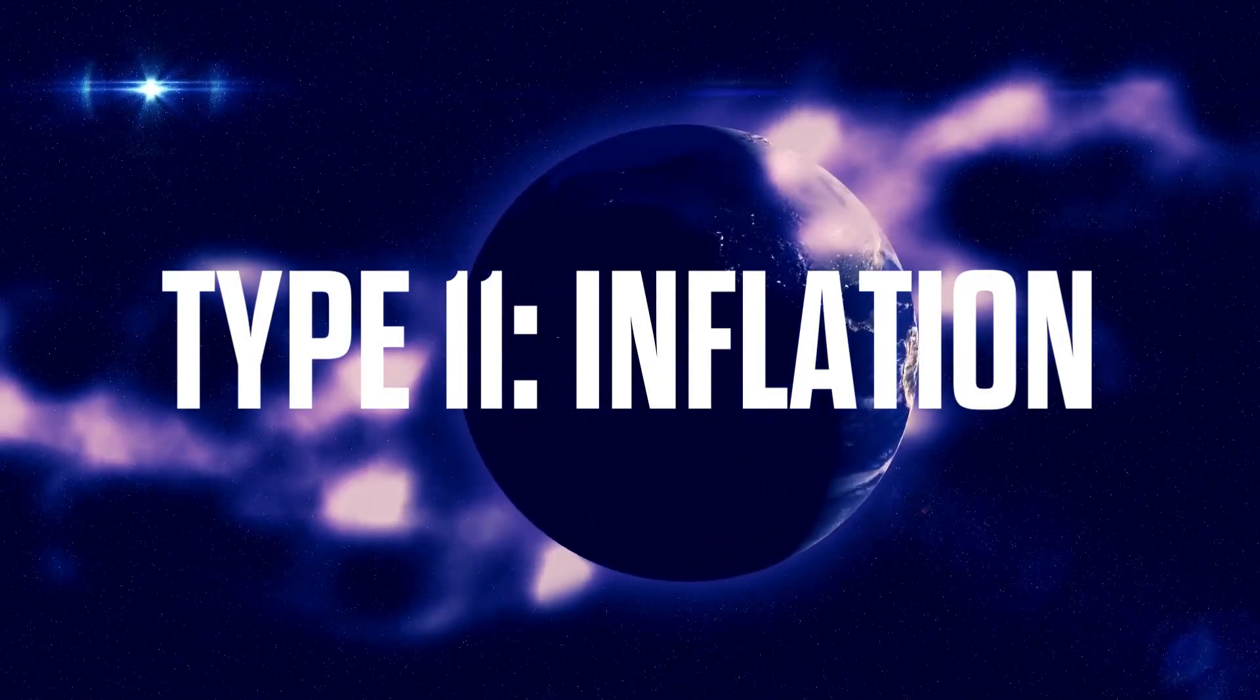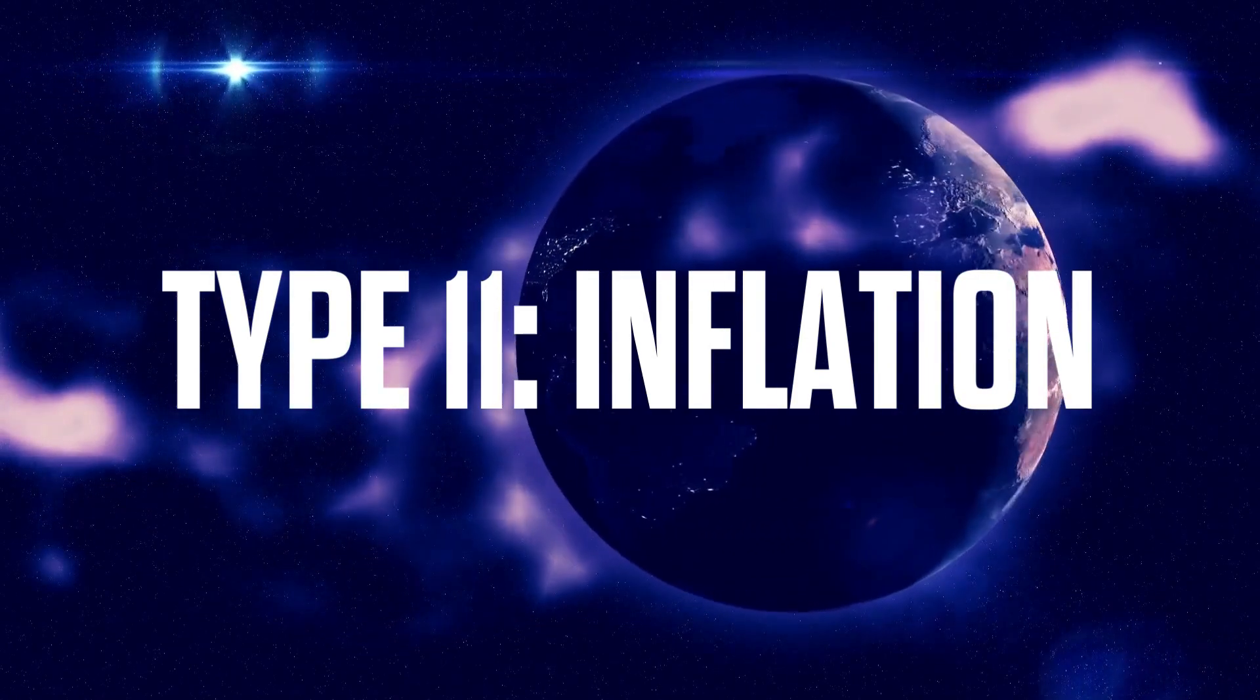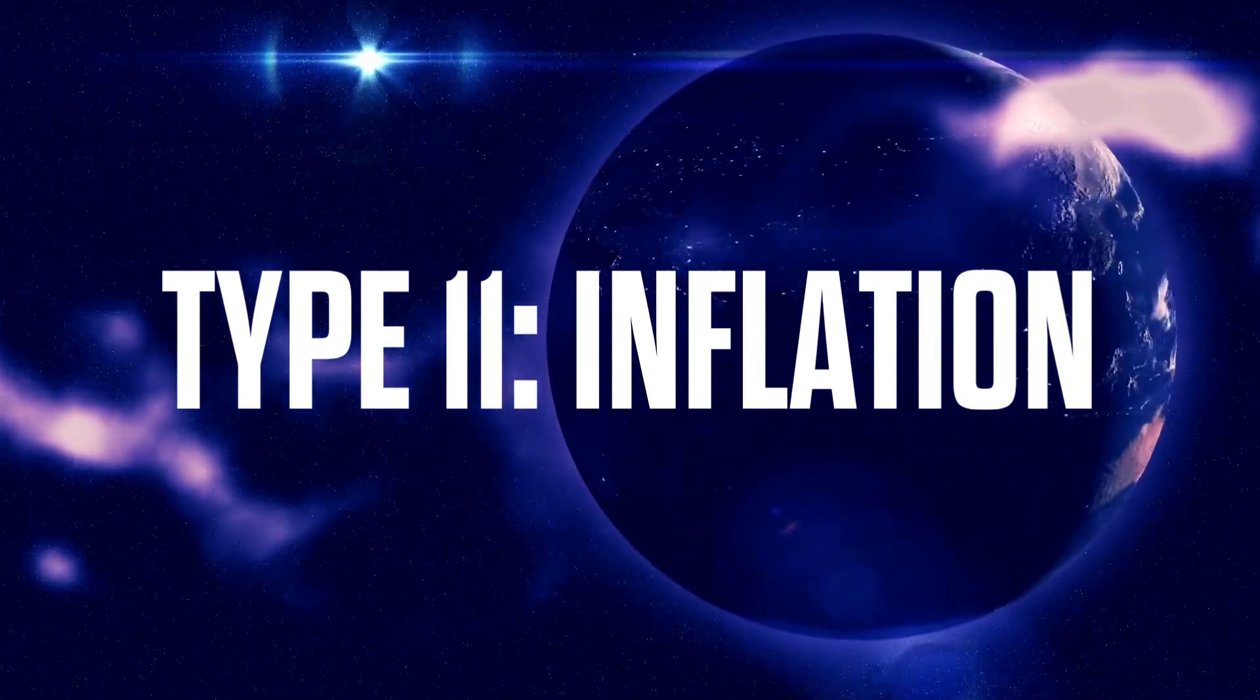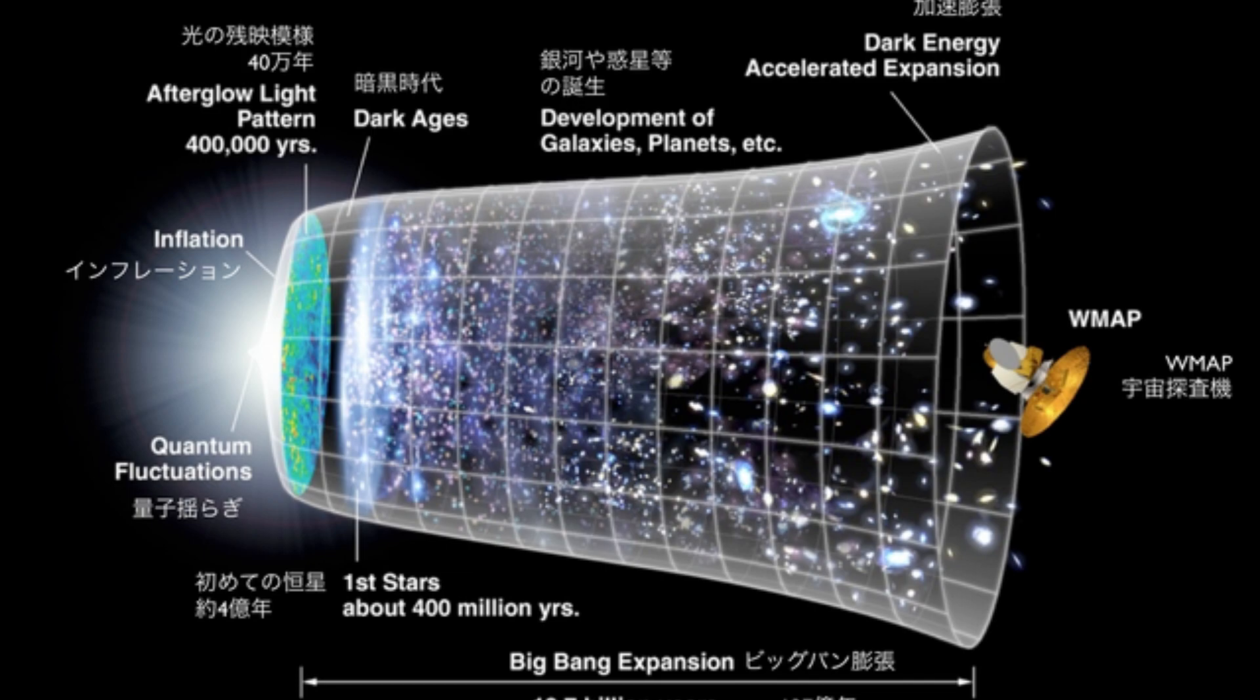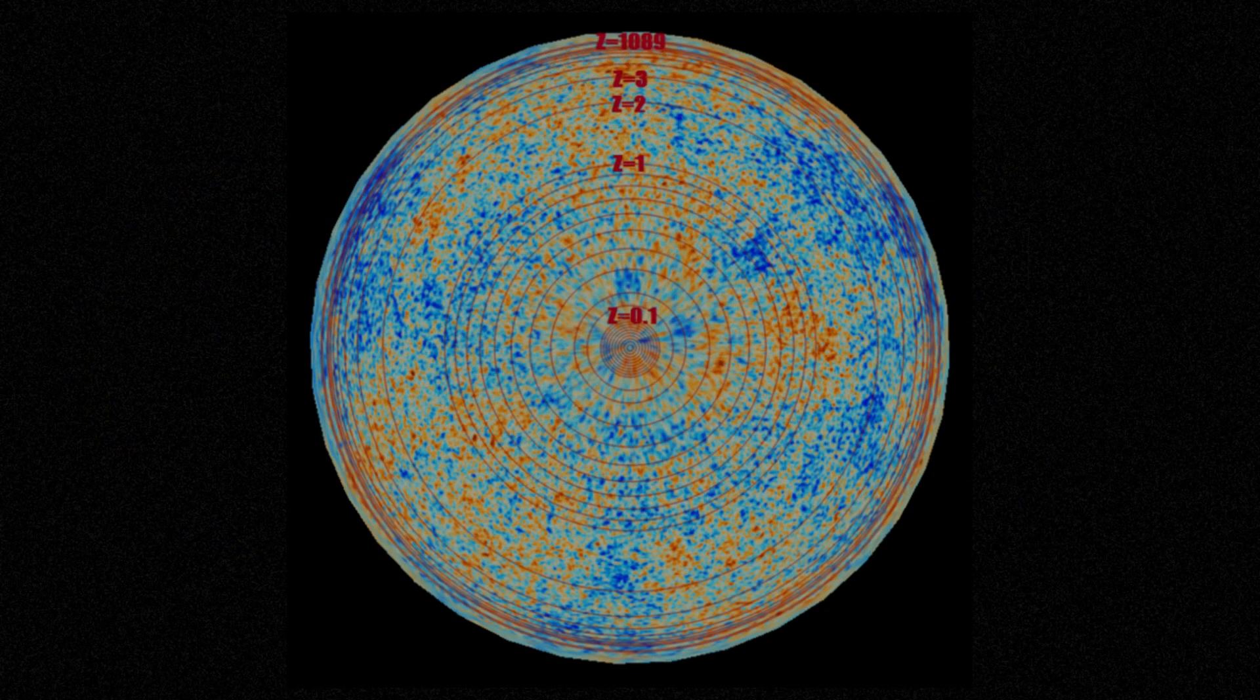The second type of multiverse relies on inflation, a reputable physics theory that originated in the 1980s to explain some features of our universe. For example, why space seems to look the same no matter which direction we look, and why space does not seem to be curved back in on itself.